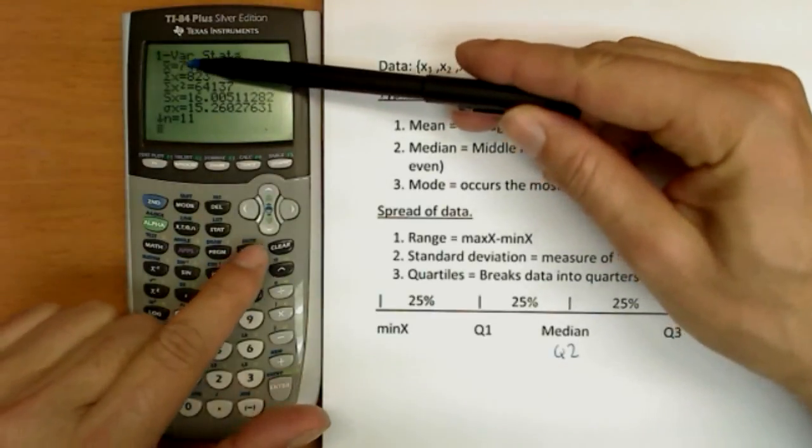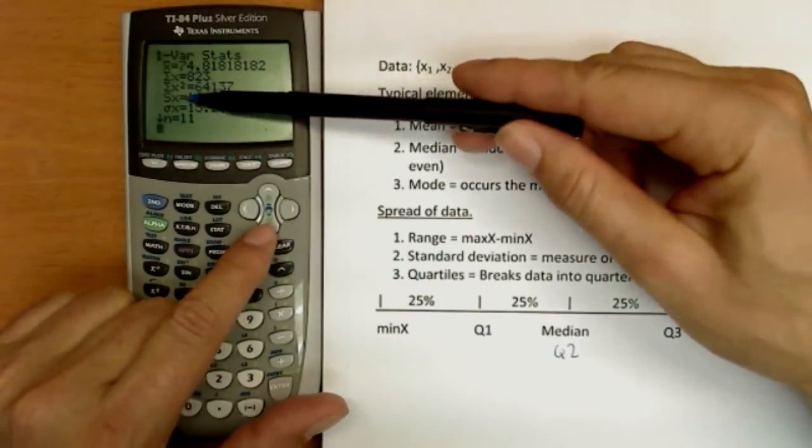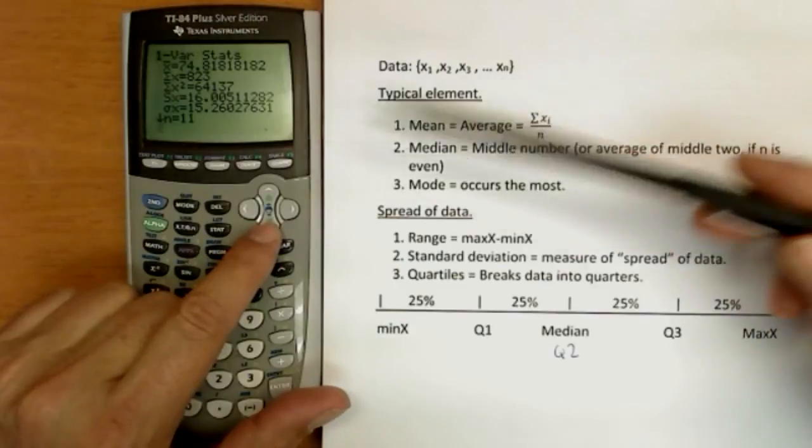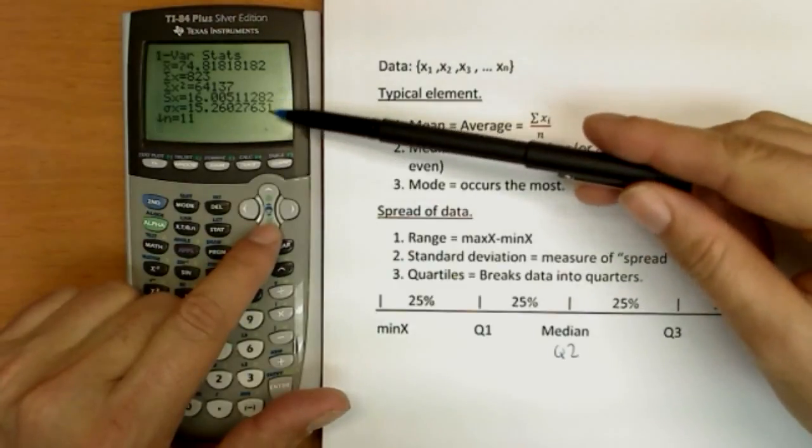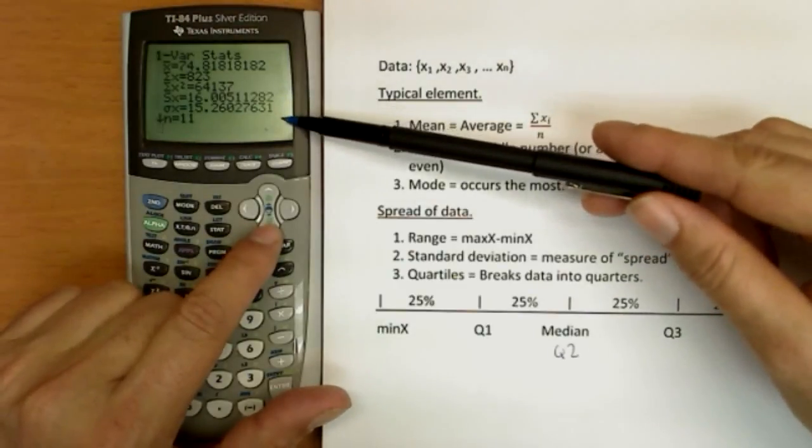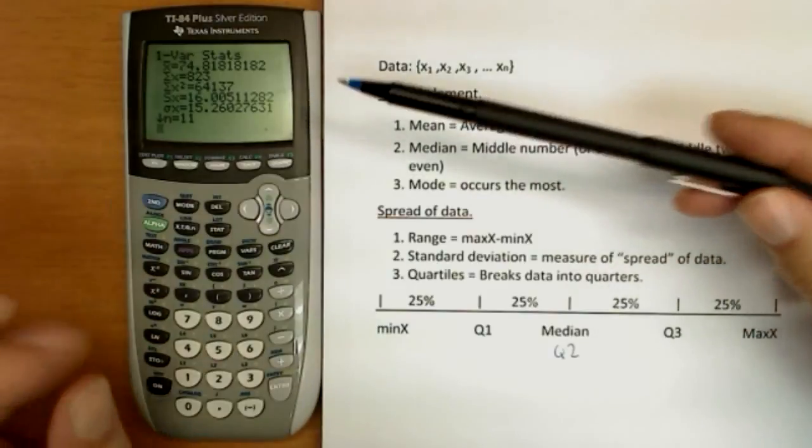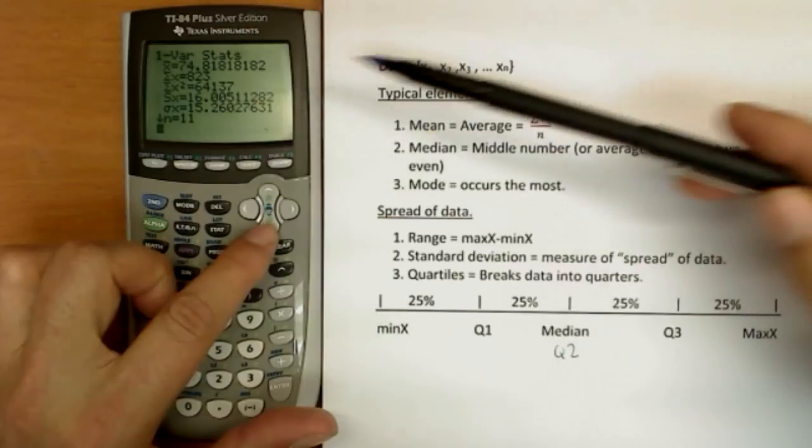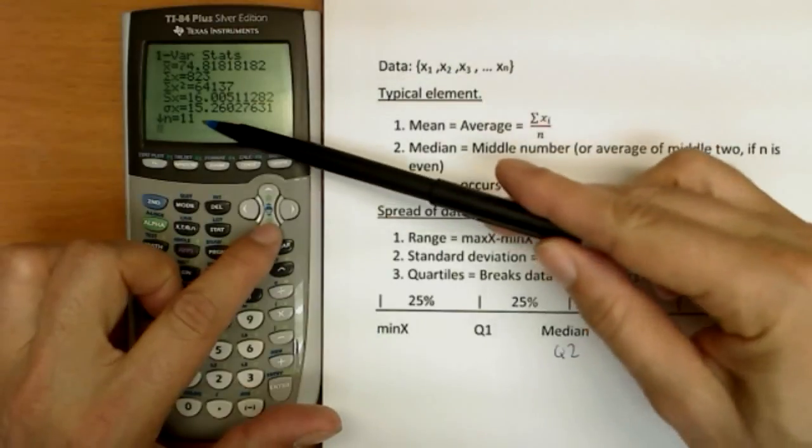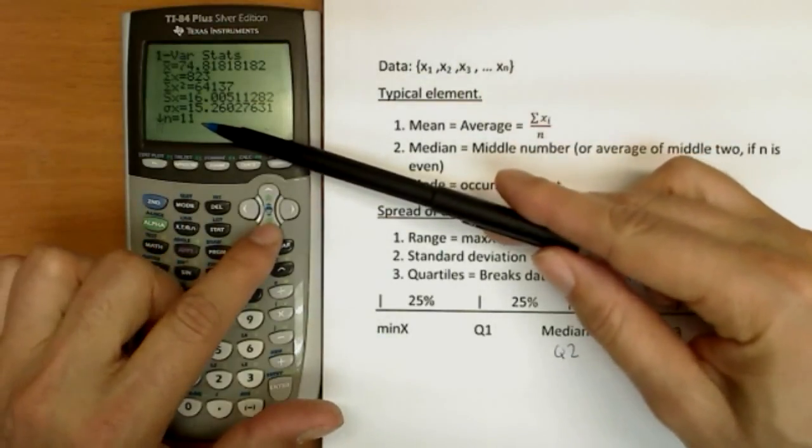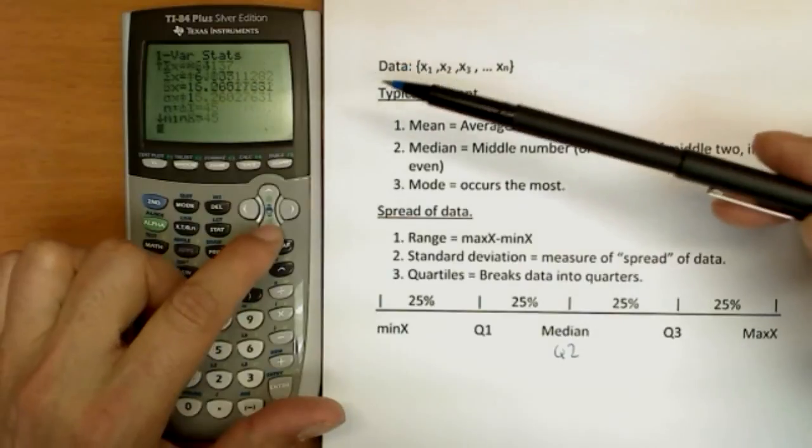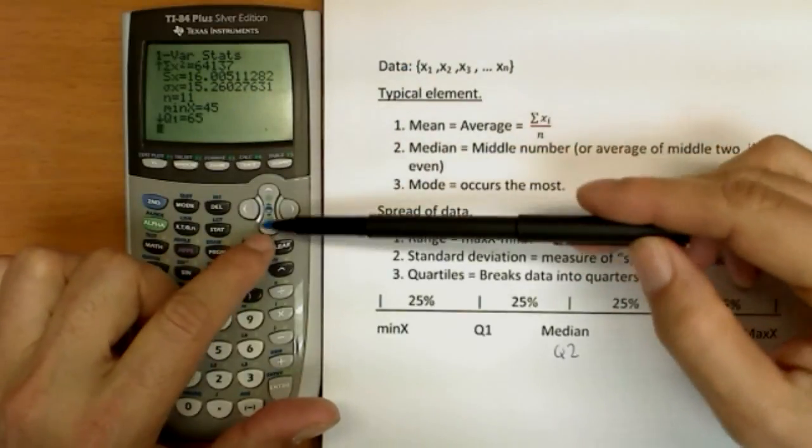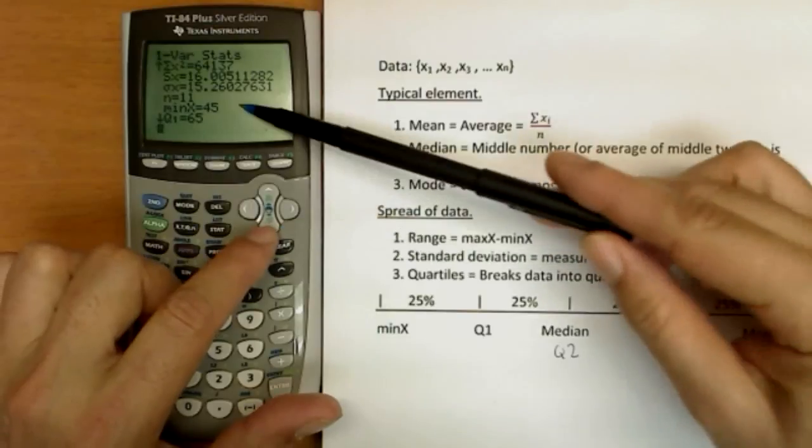X bar is the average. Sx and sigma x are two versions of standard deviation. And it's a little complex why there's two. One is if your mean is from an estimate of the population, the other's if your mean is from the entire population. We won't concern ourselves with that. You can use either one in this course. And the numbers get closer and closer together if you have more data. N is the number of data points. So this makes a good check to see if you've typed the data in. Then we have the minimum. If we go down, there's so much data it doesn't fit on the screen. So we'll use the down arrow to get the rest of it.